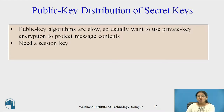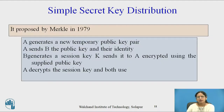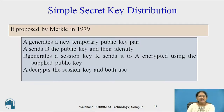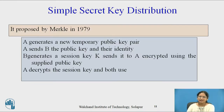For public key distribution of secret keys: public key algorithms are slow, so we usually want to use private key encryption to protect message contents, and this requires a session key. In the simple secret key distribution proposed by Merkle in 1979: A generates a new temporary public key pair, A sends B the public key and their identity, B generates a session key and sends it to A encrypted using the supplied public key, and A decrypts the session key. Both then use the same session key for that particular session.